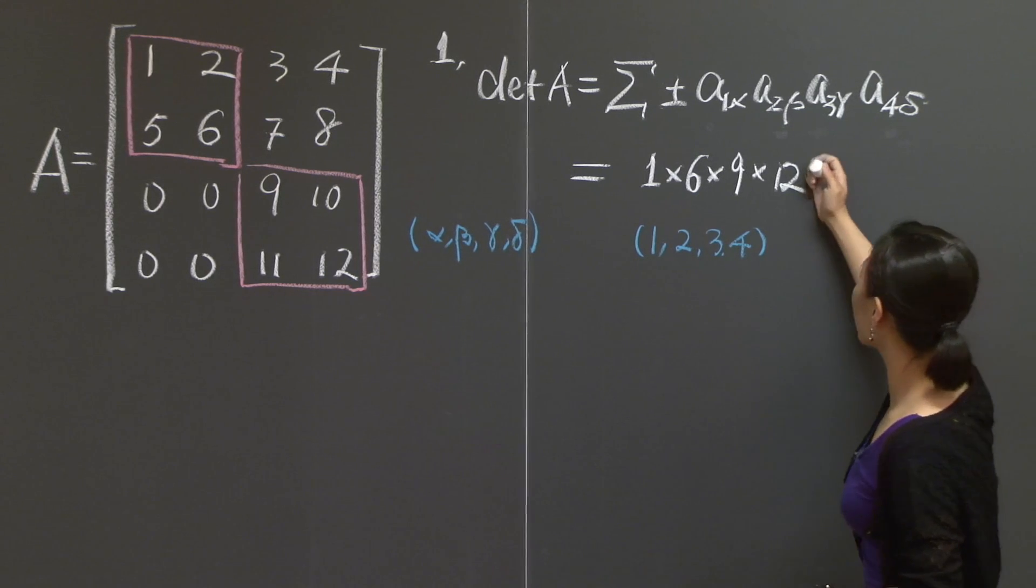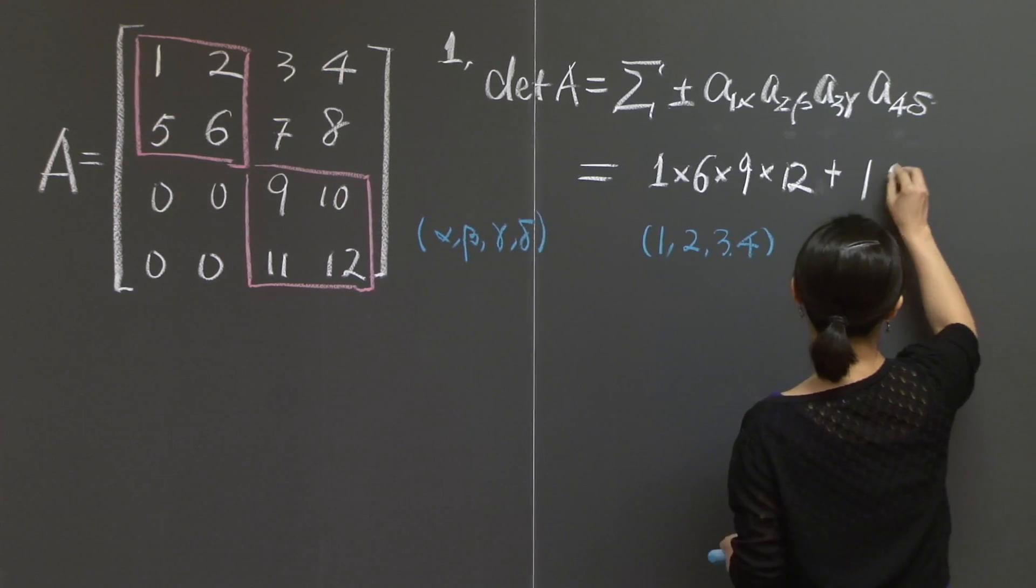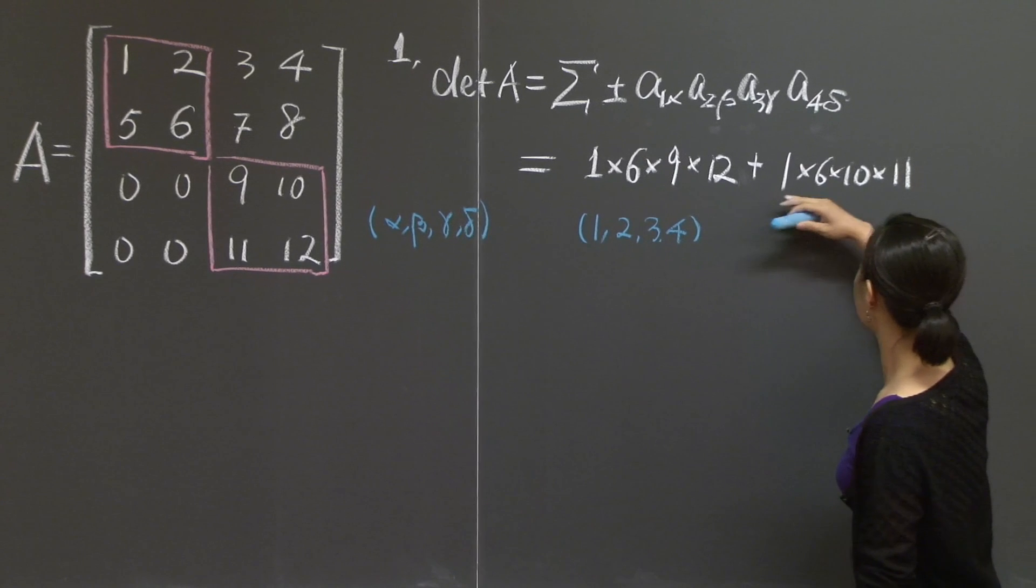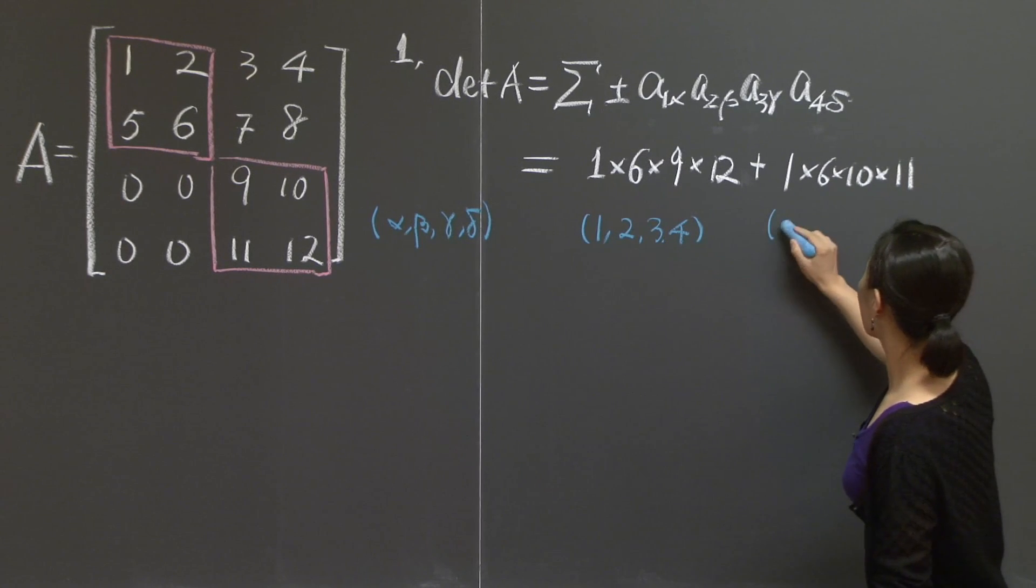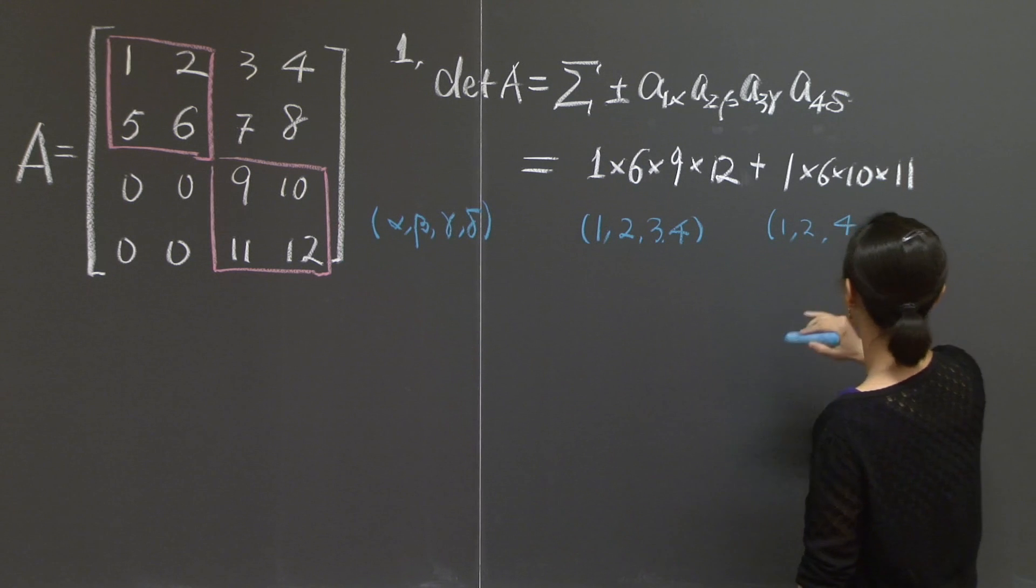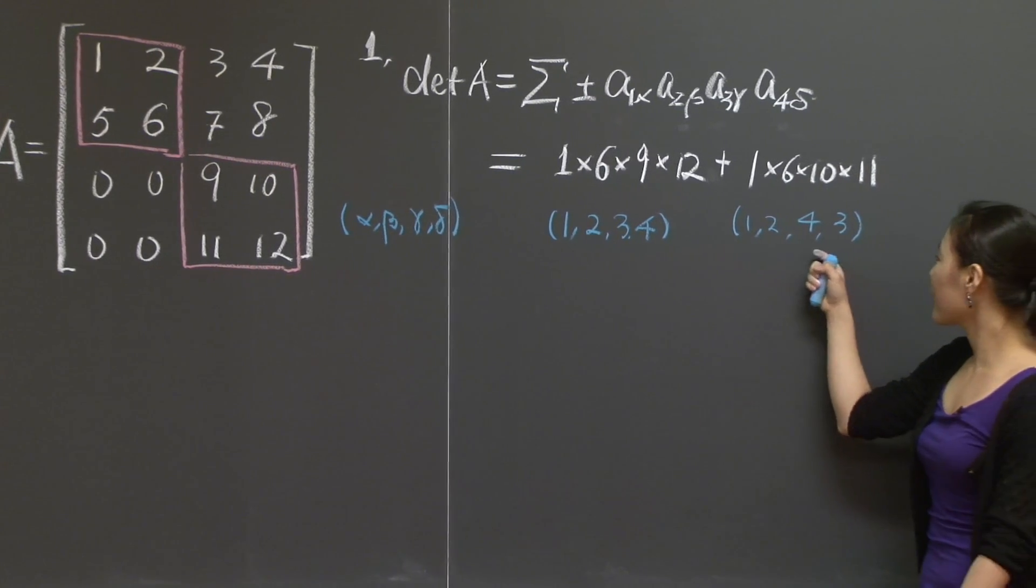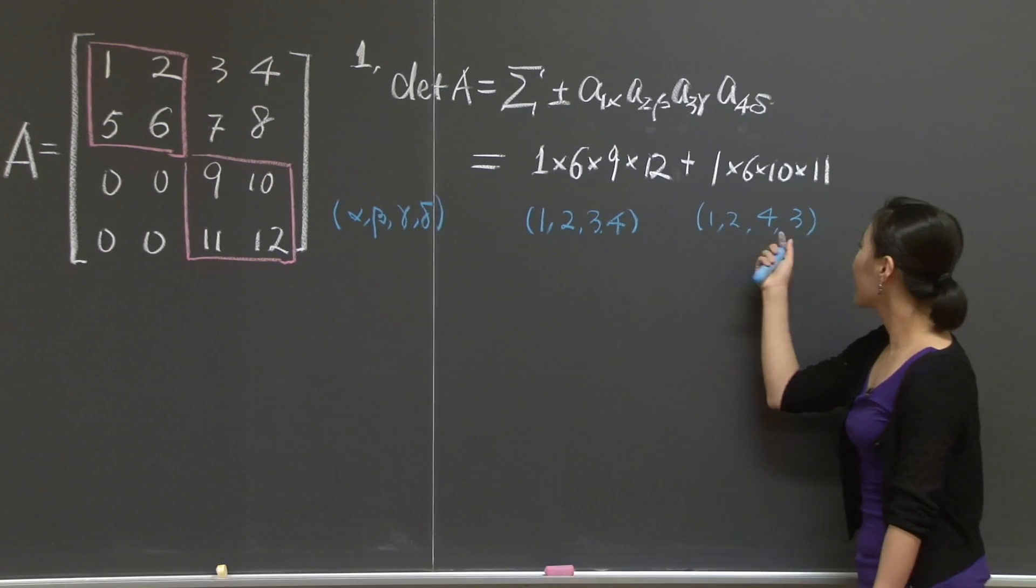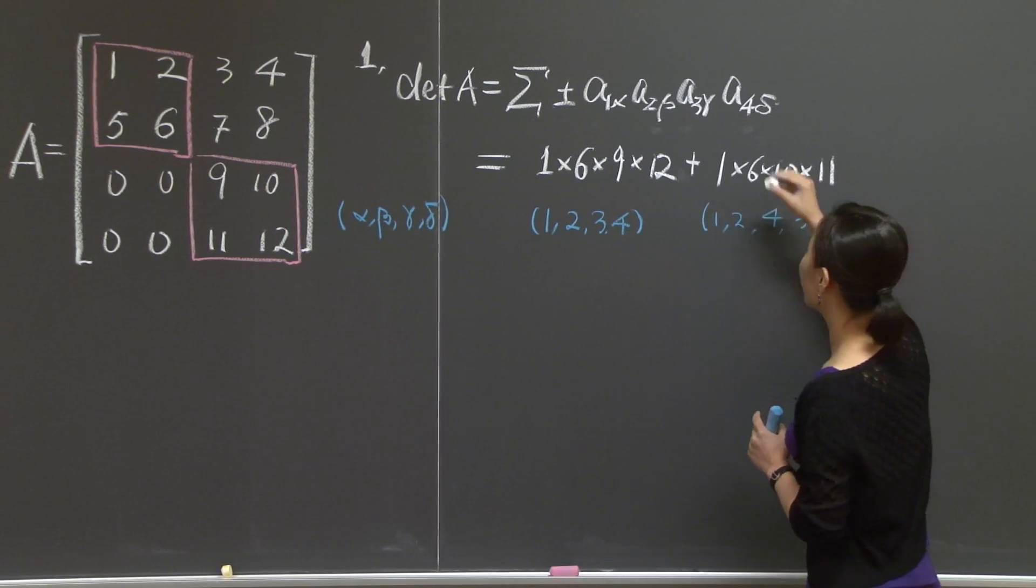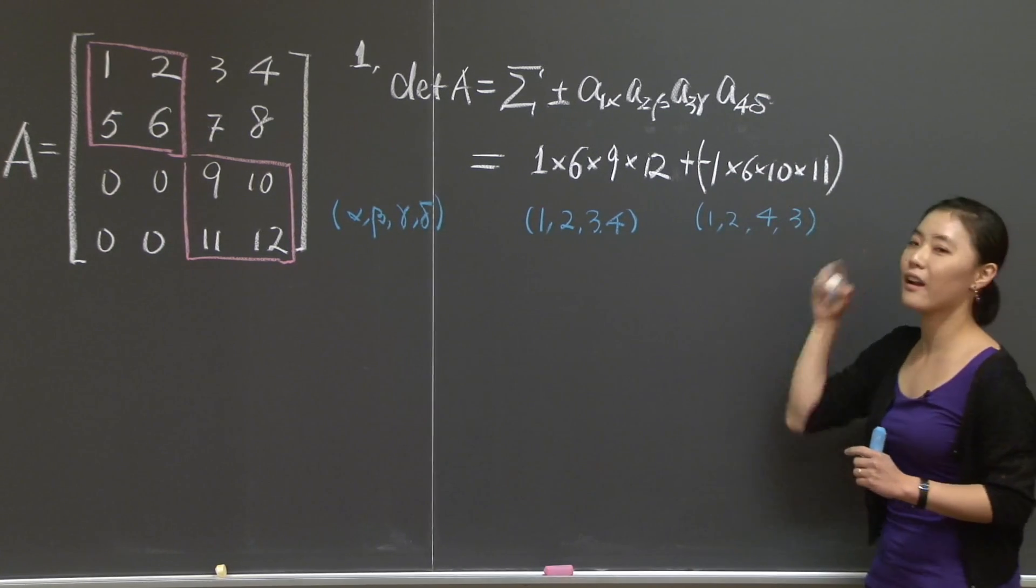Let's continue. Now I'm going to look at 1-6 but 10-11. So 1 times 6 times 10 times 11. What are the coordinate numbers of this choice? A11, A22, 10 comes from A34, so here I have 4 in the front. The last one is A43, so 3 here. This is a permutation of 1, 2, 3, 4. In order to get back to this, I have to exchange 3 and 4 just once, which means I need a negative sign in the front.